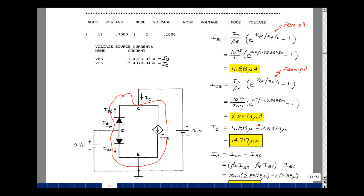But I can add these two up. That's the value of I sub b, and that's 14.717 microamps, and that's the value that's right here. So it checks.